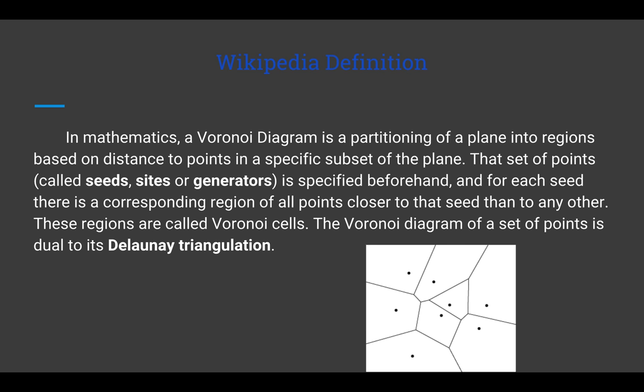The Wikipedia definition is essentially the same except it mentions that the points are called seeds, sites, or generators, and that a Voronoi diagram is dual to its Delaunay triangulation. But what does it mean that a Voronoi diagram is the dual of its Delaunay triangulation?